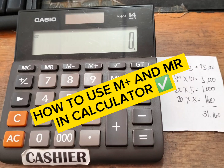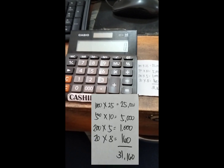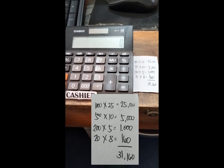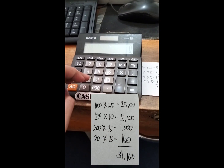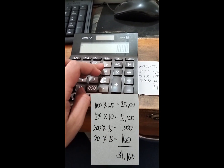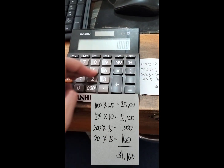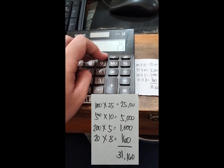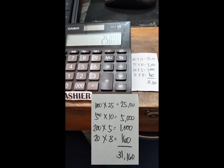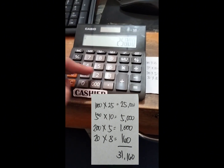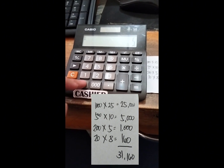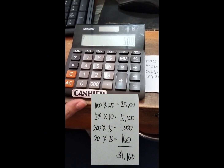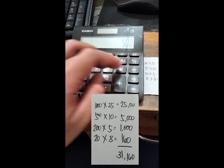How to use M Plus and MR in a calculator. Let's start from the top: 1000 times 25 — press M plus. Next is 500 times 10.